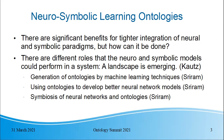Ram described three different ways that ontologies and neural network machine learning techniques can be related to each other: you could generate ontologies, you could use ontologies to develop better neural network models, or you could have a full symbiosis of both paradigms.